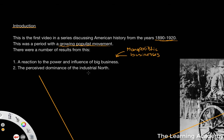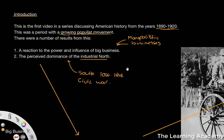There was also a perceived dominance of the Industrial North. Don't forget the South had just lost the Civil War. Many historians argue that the South was always going to lose the Civil War due to the infrastructure, the railways, and just the general economic powers of the North. One of the things that led to the South being so successful was their successful generals. But there is still an increased perception of industrial might and economic dominance from the North of America rather than the Southern states.